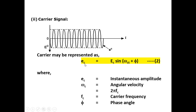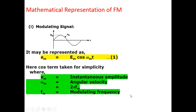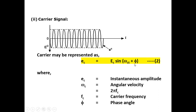The carrier signal is similarly represented as ec = EC·sin(ωc·t + φ), where EC is the instantaneous value, capital EC is the maximum value of the carrier signal, ωc is the angular velocity calculated by 2π·fc, φ is the phase angle, and fc is the carrier frequency. So we have two important equations: em = EM·cos(ωm·t) and ec = EC·sin(ωc·t + φ).